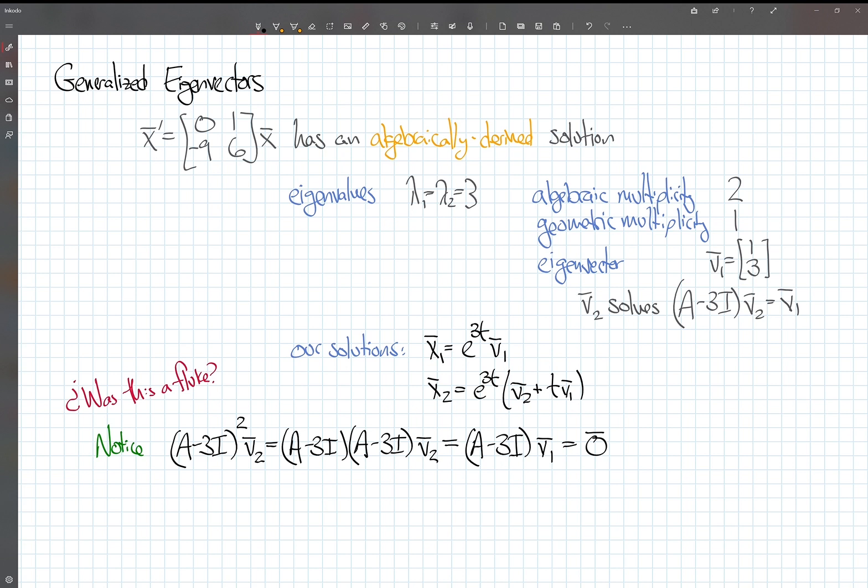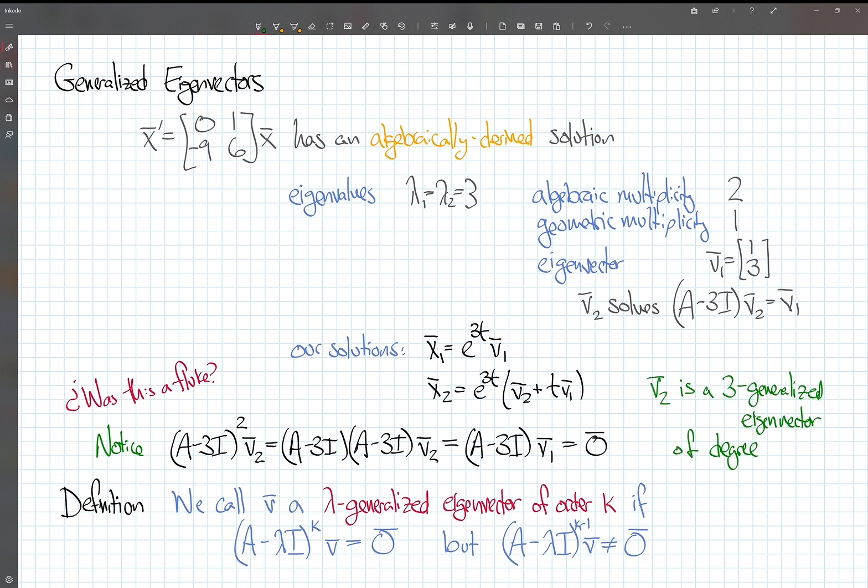So, in fact, we get 0. The way to think of this is that A-3I doesn't kill v2. A-3I times v2 gives you v1, that's not 0. But as long as you're willing to do A-3I enough times, you can kill v2. And that's really the key. We're going to give this sort of thing a name. We call v a lambda generalized eigenvector of order k, if there is some power, call that power k, of A-lambda I that does, in fact, kill v. But if you took even one less power, you go down to k-1, that didn't kill v.